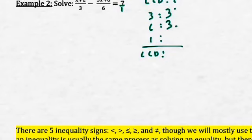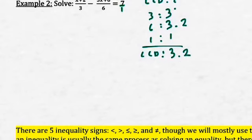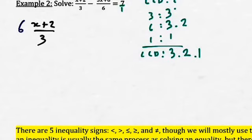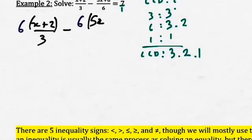So 3 is going to be 3, 6 is going to be 3 times 2, and 1 is going to be 1. My LCD, based on the definition, is the product of each factor with the highest power. In that case, I'm going to have 3 times 2 times 1, which gives me 6. So I multiply by 6 both sides of my equation, using parentheses, giving me 6 times 7 on the right side.